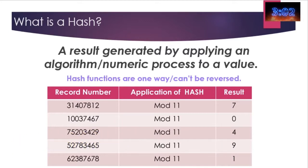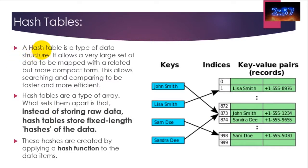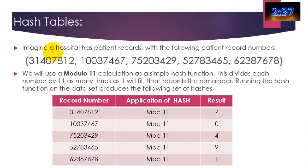So why is it important in computer science and how do we use it? Well, a hash table is a type of data structure. It's an array, but basically it allows you to very quickly search for an item in a large array rather than doing some kind of sequential search where you're going through each item at a time. So let's see it in action and then all of this will make complete sense to you. So imagine a hospital has patient records with the following patient record numbers. We will use the modular 11 calculation to work out the hash value.